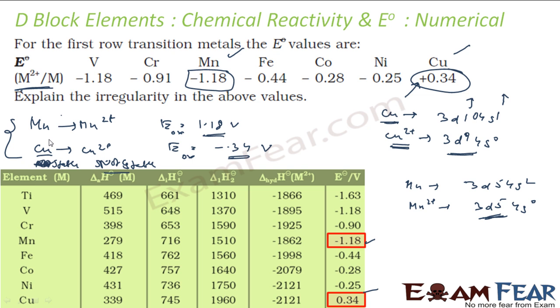We can also see the same thing from ionization energy. For copper, the second ionization energy has increased so much. See the trend. It has increased a little bit for others, but here it has increased so much. Why? Because to pluck out one electron from Cu⁺ ion...